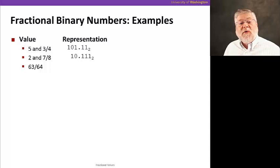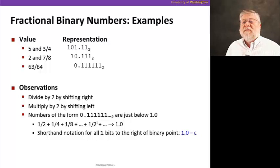For sixty-three sixty-fourths, there is no integer part to the number, so we'd have a zero to the left of the binary point. And then a half plus a fourth plus an eighth plus a sixteenth, all the way down to get us to sixty-three sixty-fourths. And that's going to be the equivalent of six ones. So zero point one one one one one one.